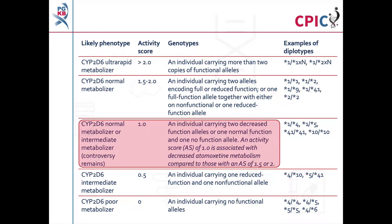Indeed, some reference laboratories classify diplotypes with an activity score of 1 as intermediate metabolizers. This current controversy is reflected in the guideline where diplotypes with an activity score of 1 are noted to be normal or intermediate metabolizers.